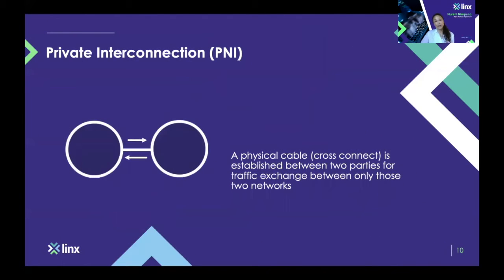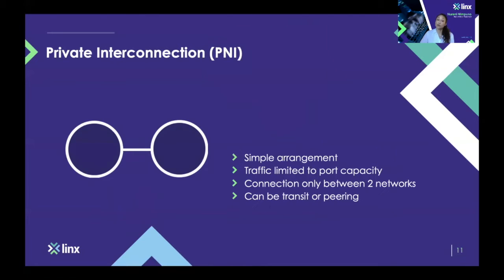Another common way for networks to exchange traffic is through private interconnection. Private interconnection is simply a term for two networks exchanging traffic between themselves on a private link. This could be a cross-connect pulled at a data center — a cable plugged into both networks' equipment — used to exchange traffic between the two networks. It's suitable where you want traffic to go just between those two networks, but it's limited in that you can't reach more than those two networks, and you're limited to whatever port capacity you have for that link.